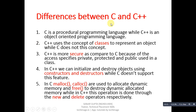Now moving to the differences between C and C++. The first and very important difference is: C is a procedural or function-oriented programming language, while C++ is an object-oriented programming language. The difference between these terminologies has been discussed in the fundamentals of C++ tutorial, which you can refer to. The next point is: C++ uses the concept of classes to represent an object, while C does not support this concept.